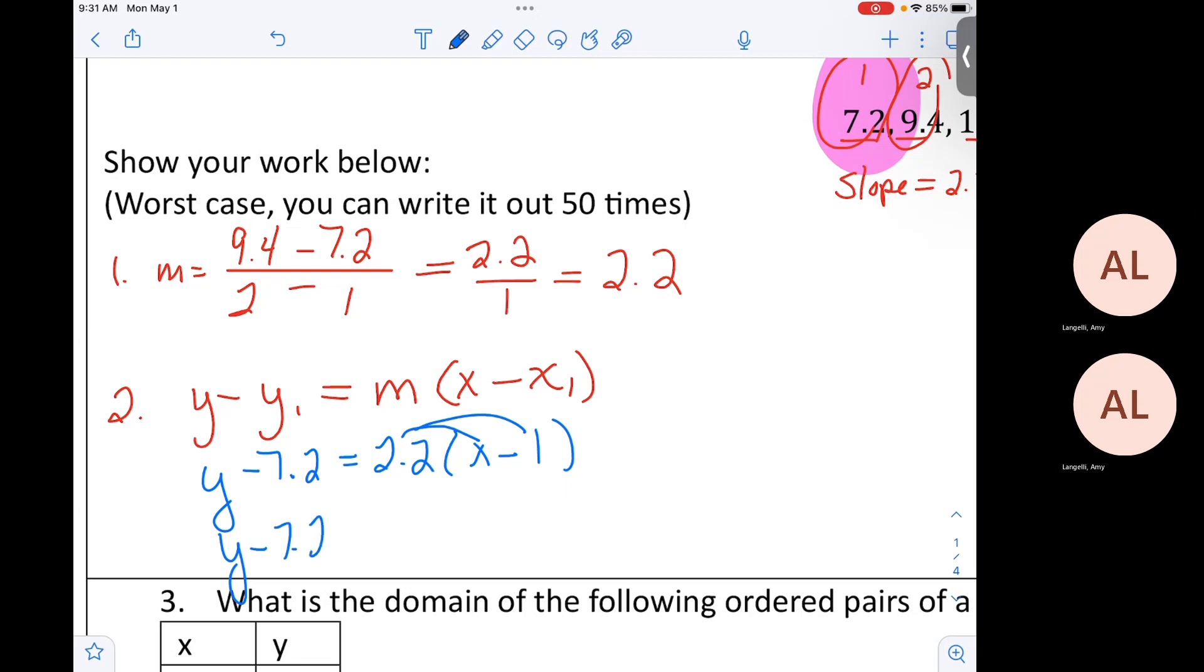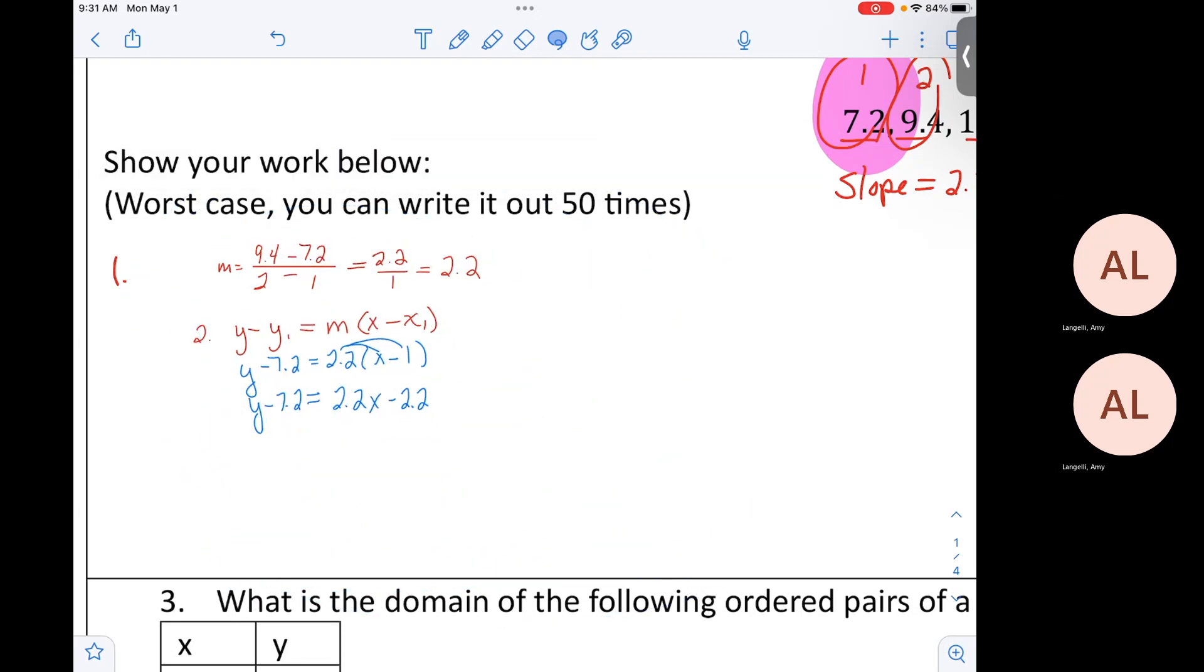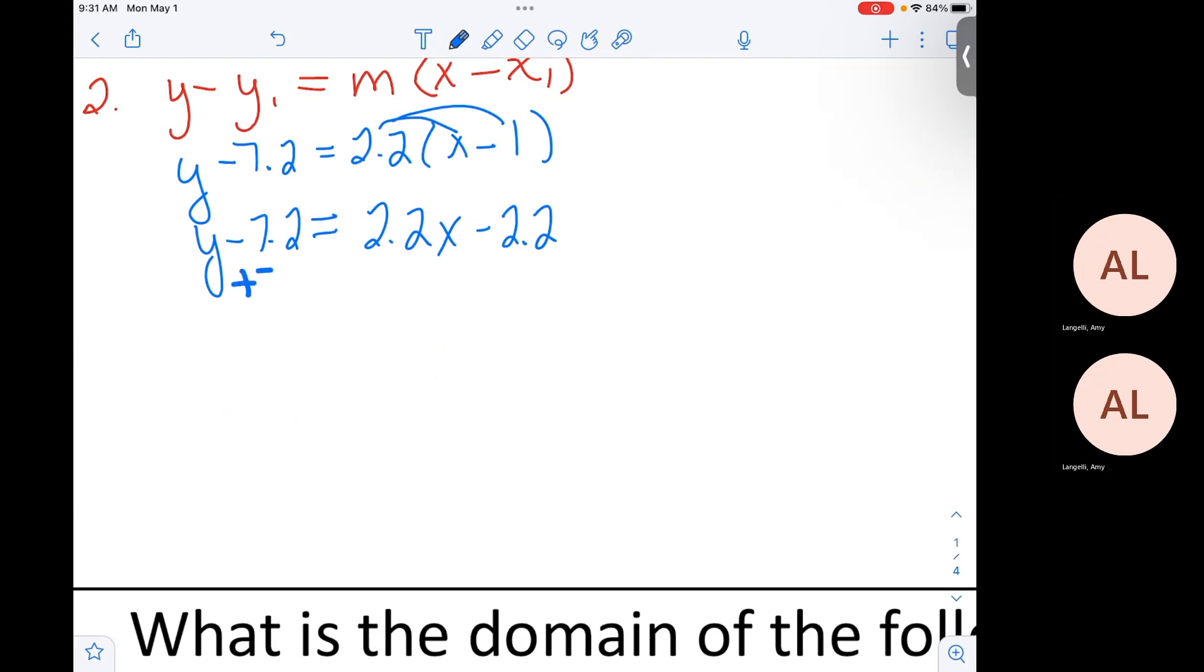And then we can get that in Y equals MX plus B by distributing. Y minus 7.2. Who can distribute? What would that be if you distribute? If I just shrink this down, because there's only one step left here. How do you guys get Y by itself? Yes.